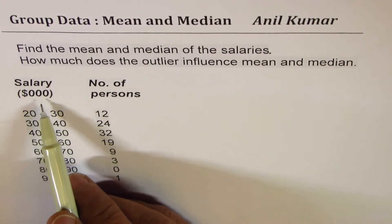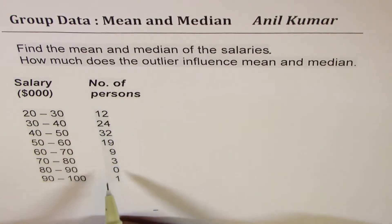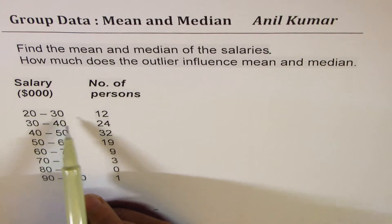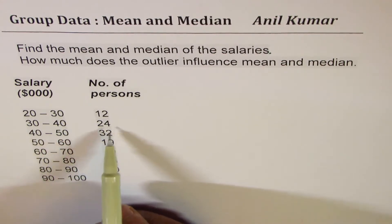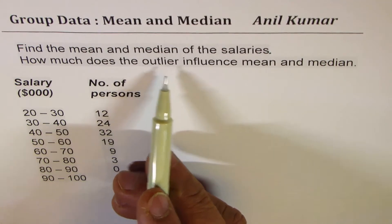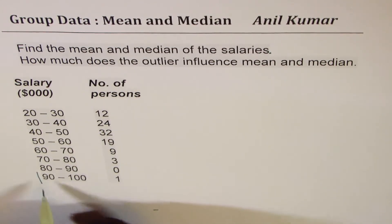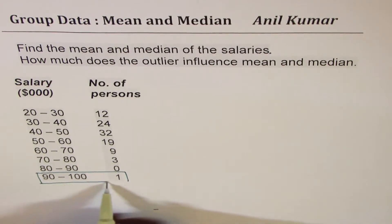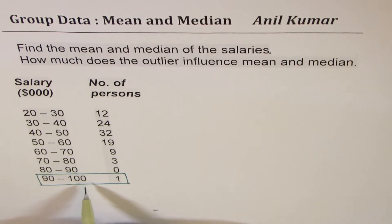We are given salaries in thousands of dollars and number of persons: 20 to 30 has 12 persons, 30 to 40 has 24, and so on. Now in this particular case, outliers will be the group 90 to 100 with one person, and we have to see what is the influence of this on mean and median.